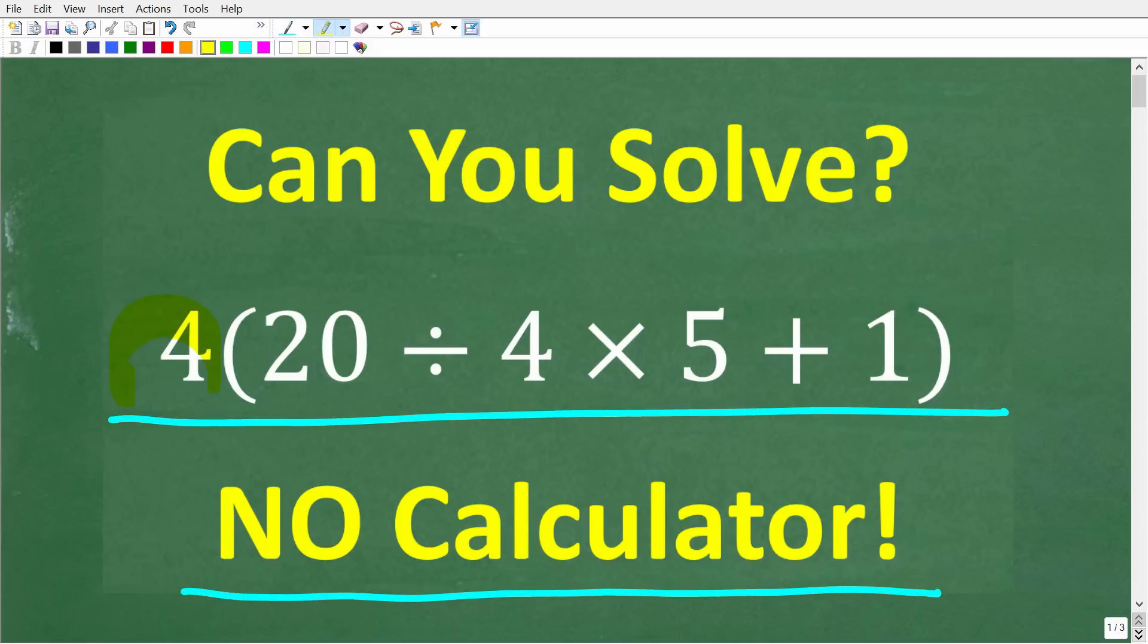So let's take a look at the problem. We have 4 times 20 divided by 4 times 5 plus 1, all of this in parentheses. So the only rule here is no calculators, but if you think you know the answer, put that into the comment section. I'm going to show you the correct solution in just one second.